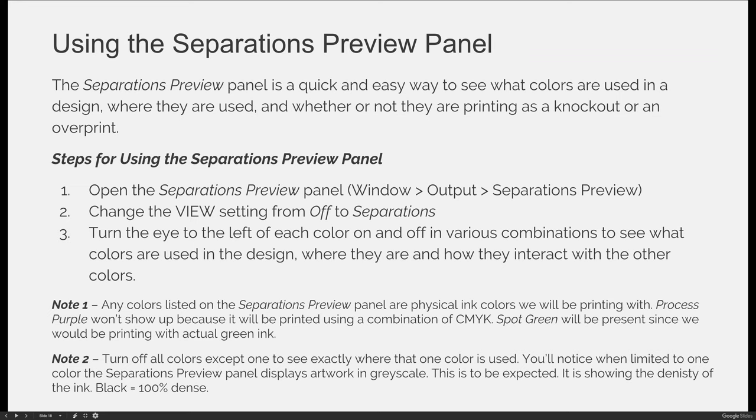For example, if you're only looking at the cyan ink color with all other eyes turned off and you see grayscale, anything that's black means it's 100% dense — it will print at 100% cyan. Anything that's a shade of gray is a percentage of cyan, so if it's very light, it might only be printing with 10% cyan in that area.